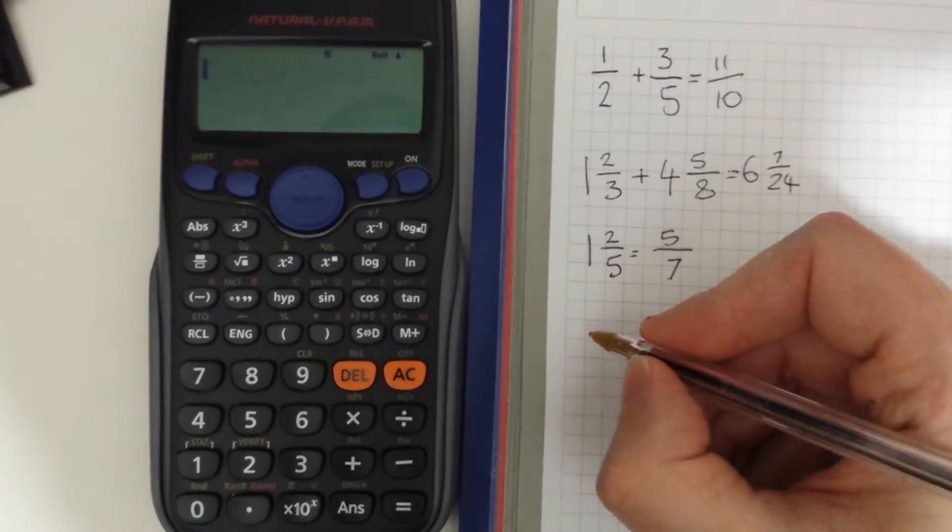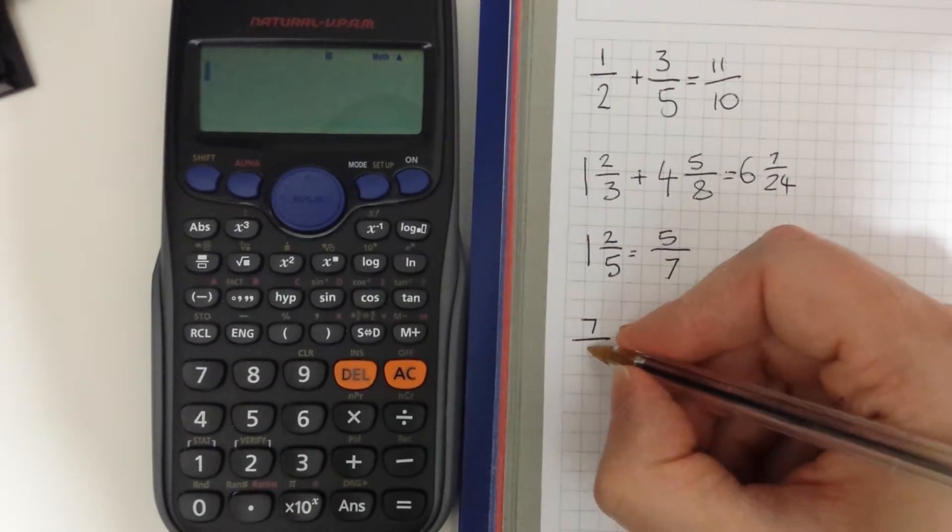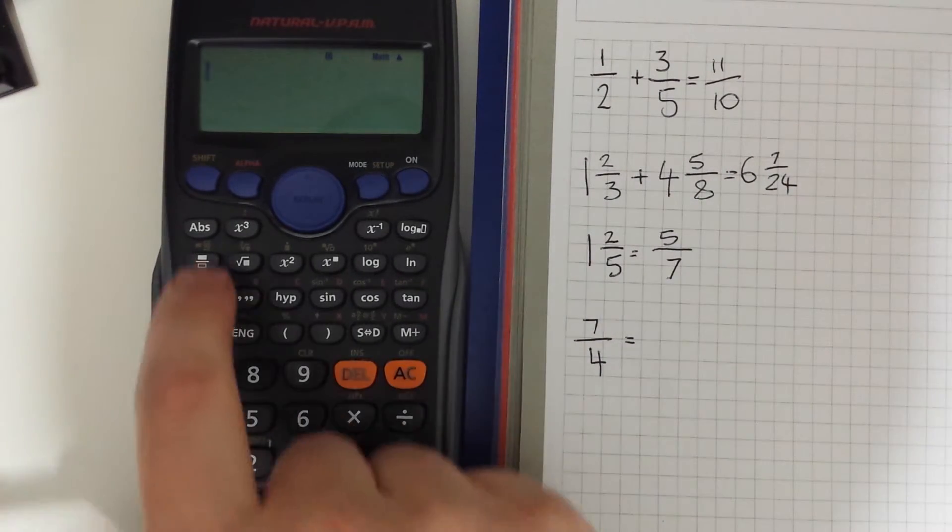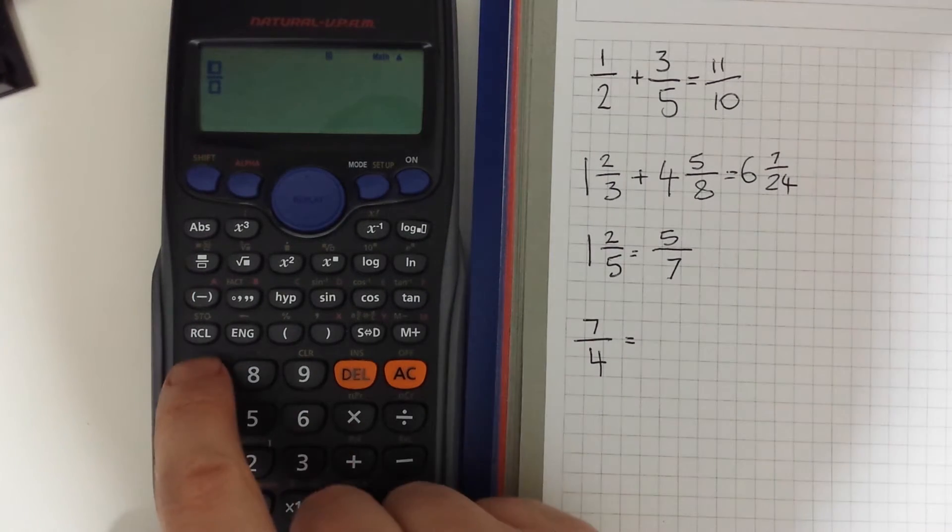So let's try that the other way. Let's do 7 over 4. So how many 7s will go into 4? How many 4s will go into 7 I should say.